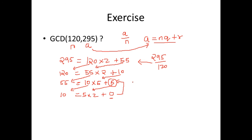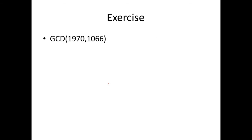This is also the Euclidean algorithm, but using the concept of division we have seen in previous slides. Now I want you to go and compute the GCD of 1970 and 1066 using the concepts we have learned.